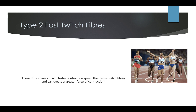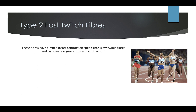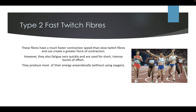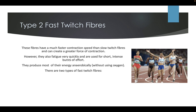Type 2 fast twitch fibres have a much faster contraction speed than slow twitch fibres and can create a greater force of contraction. However, they fatigue very quickly and are used for short, intense bursts of effort. They produce most of their energy anaerobically, without using oxygen. There are two types of fast twitch fibres: Type 2A and Type 2B.